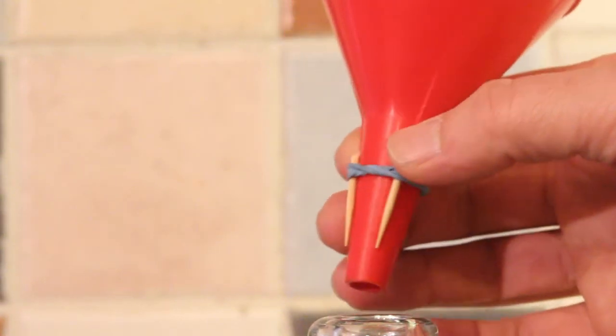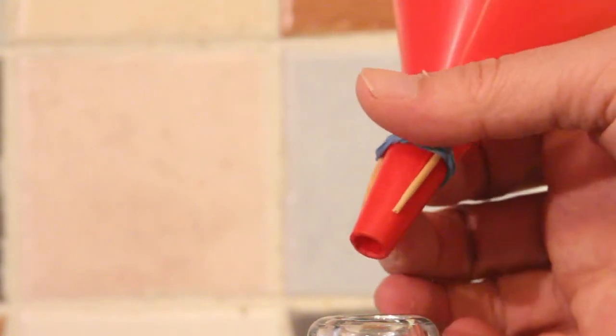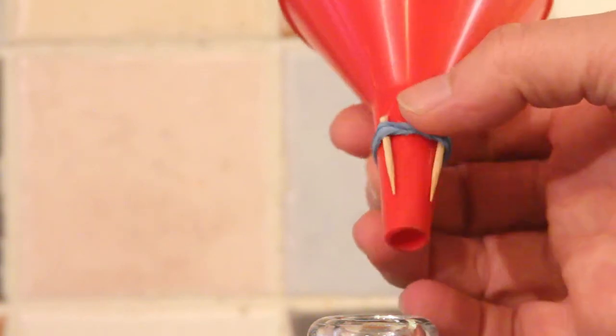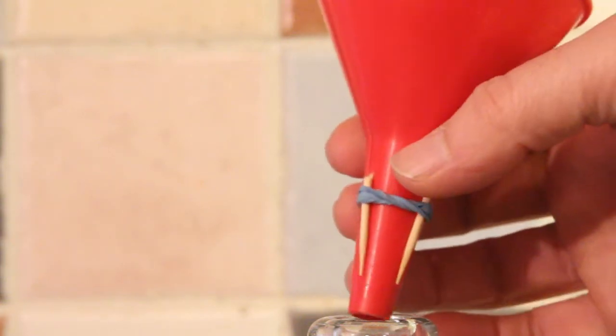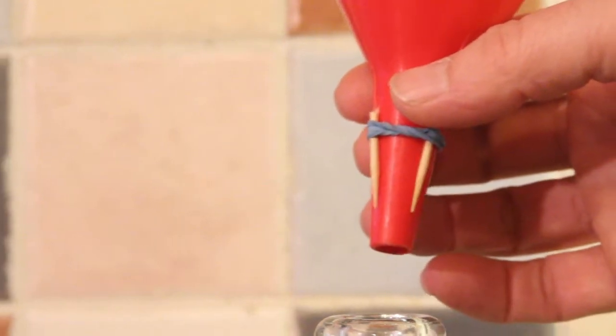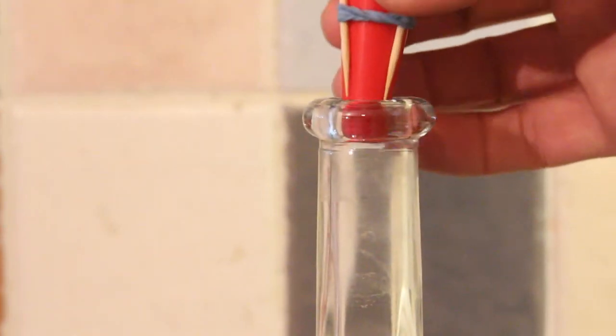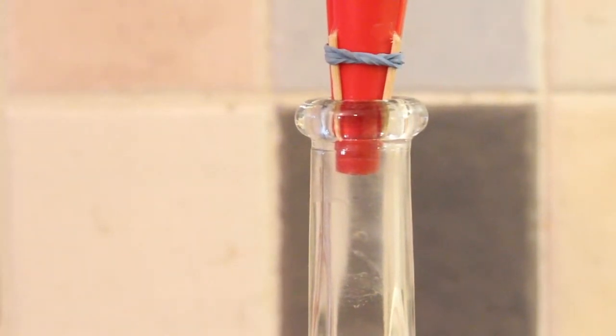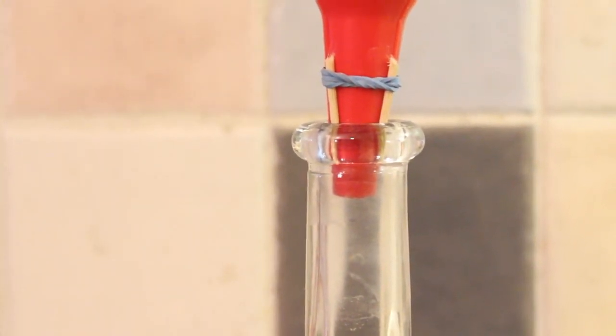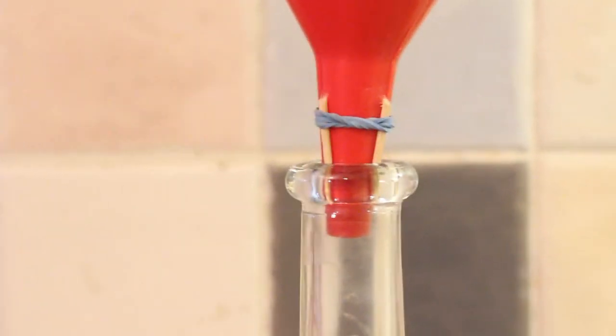I have secured three bits of cocktail stick to the side of my funnel with a rubber band, and I do that so that when I pop the funnel in, air can still come out of the bottle. It's a good tip you ought to try it.